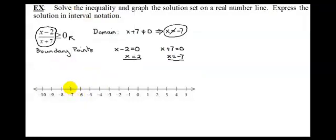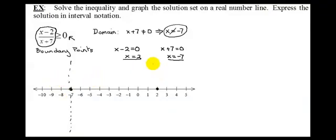So I have one boundary point at negative 7 and one at 2. Notice this divides the number line into three regions: the region to the left of negative 7, the region between negative 7 and 2, and the region to the right of 2. What I have to do is find test points in each of these regions.